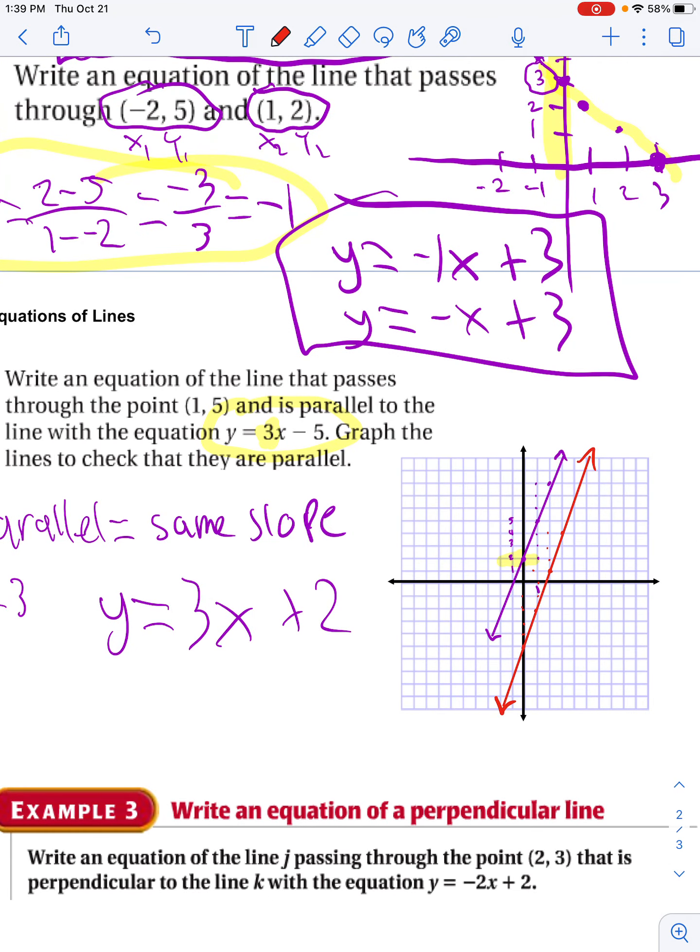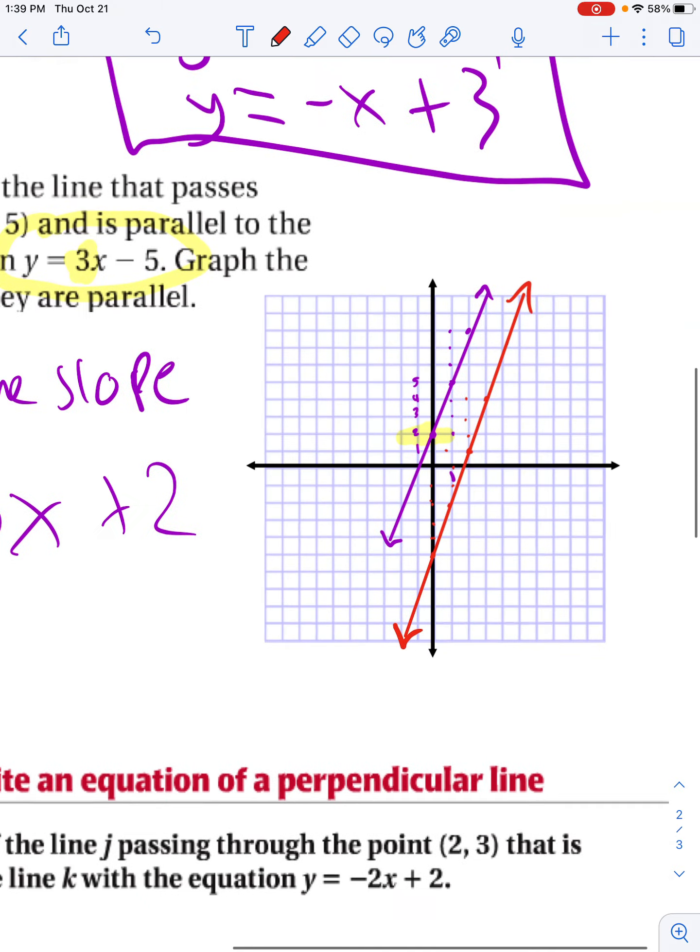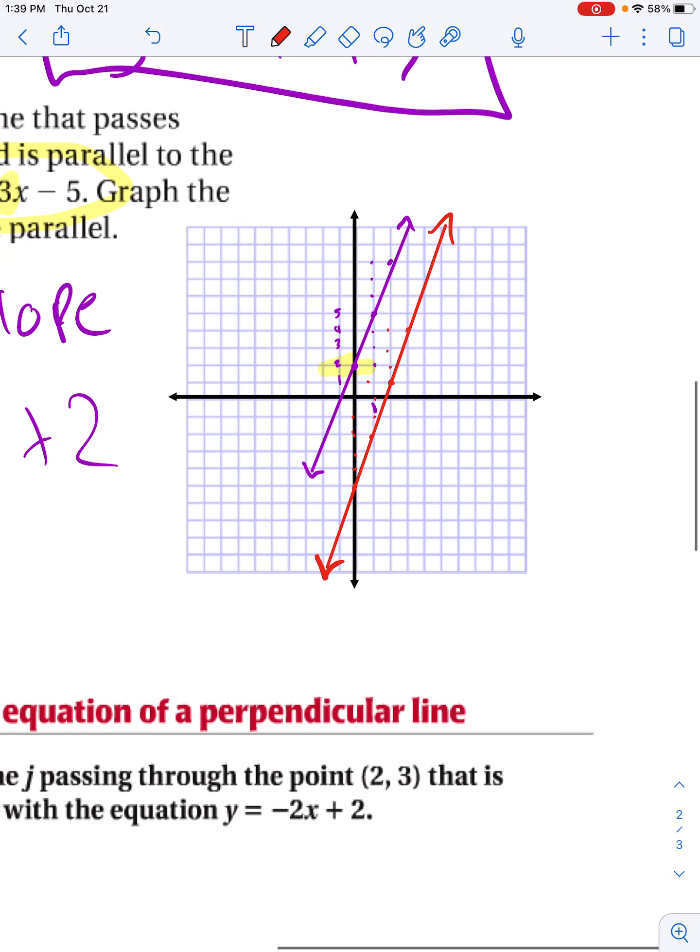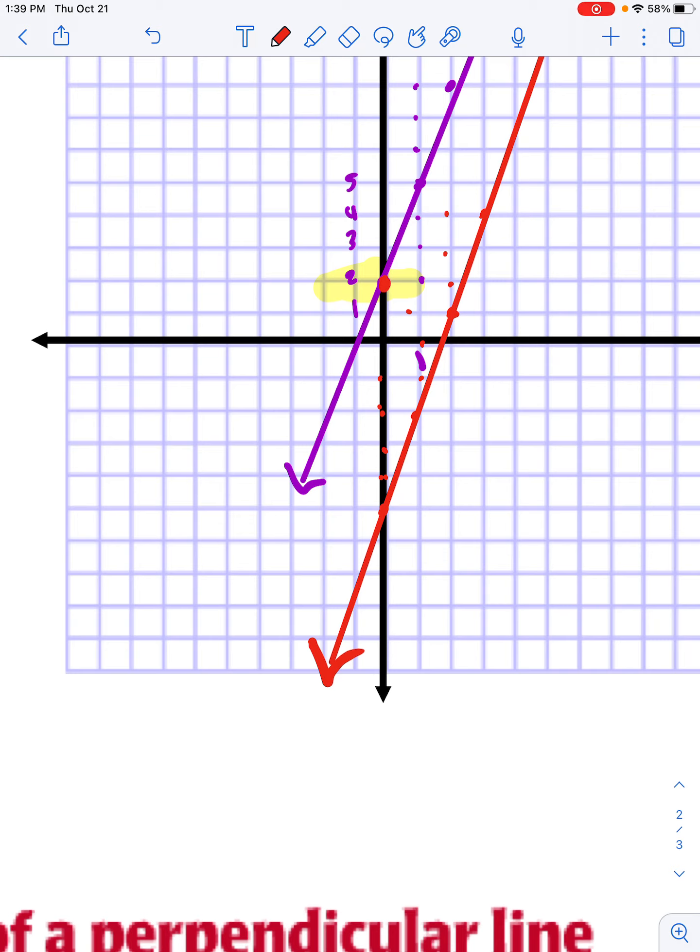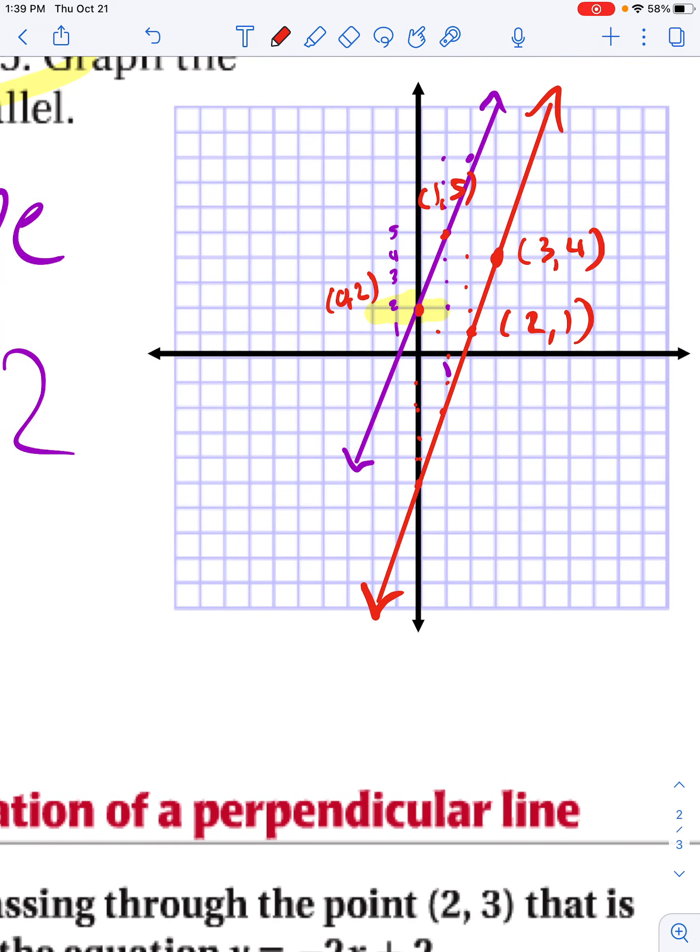And so when it tells me to check to see if they're parallel, that means pick some points and find the slopes. So again, I could say I want to choose this point, which is 0, 2, and this point, which is 1, 5, and calculate the slope. I want to choose this point, which is 3, 4, and this point, which is 2, 1. And I want to calculate the slope. And if they're the same, I know I did it correctly.